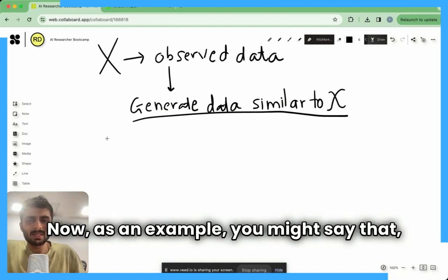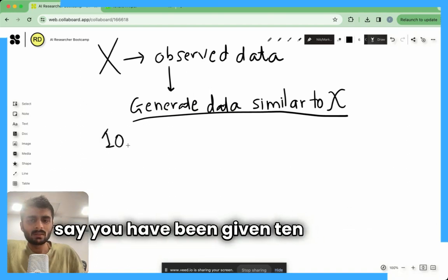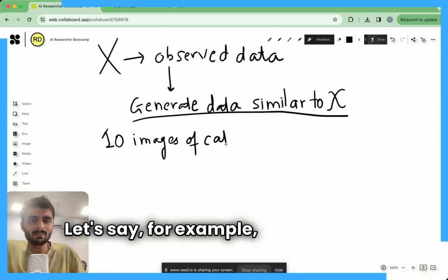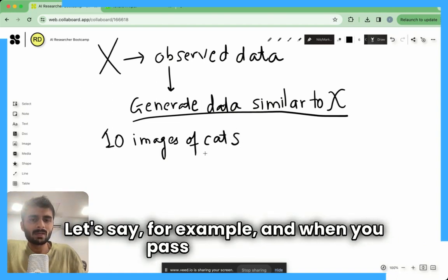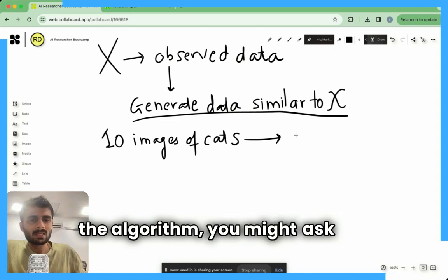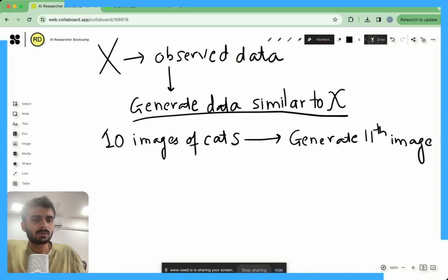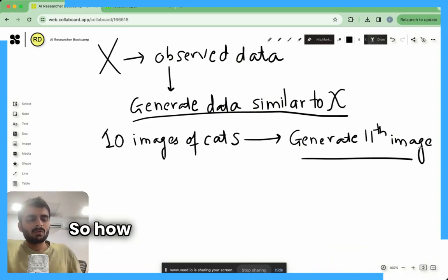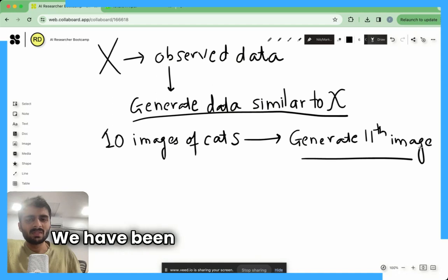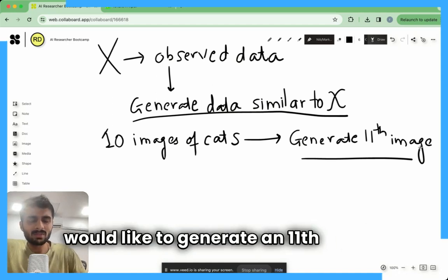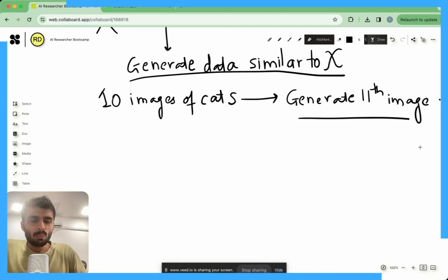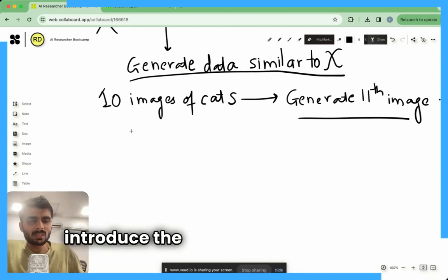As an example, let's say we have been given 10 images of cats. When you pass this through the algorithm, you might ask it to generate an 11th image. We have been given 10 images and we would like to generate an 11th image. This is where we introduce the concept of probability — we would like to learn a distribution which captures the series of images.